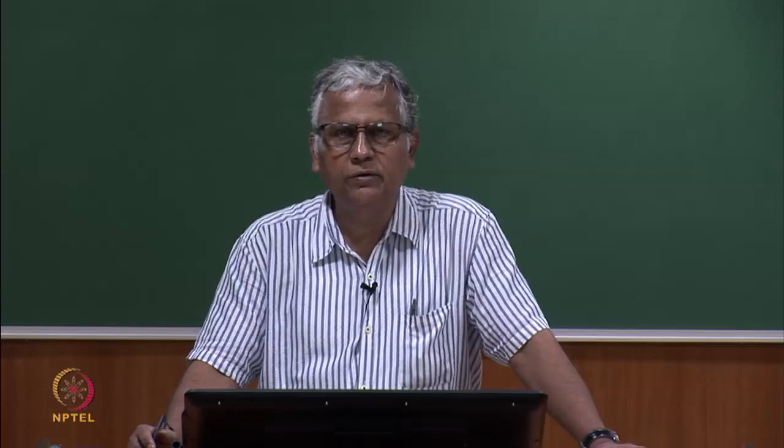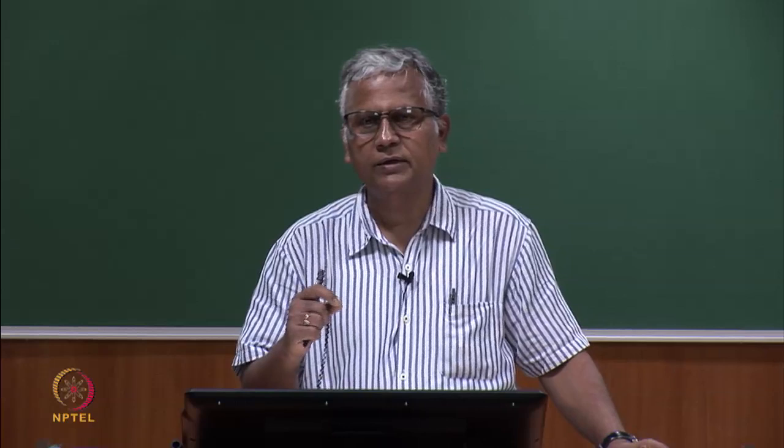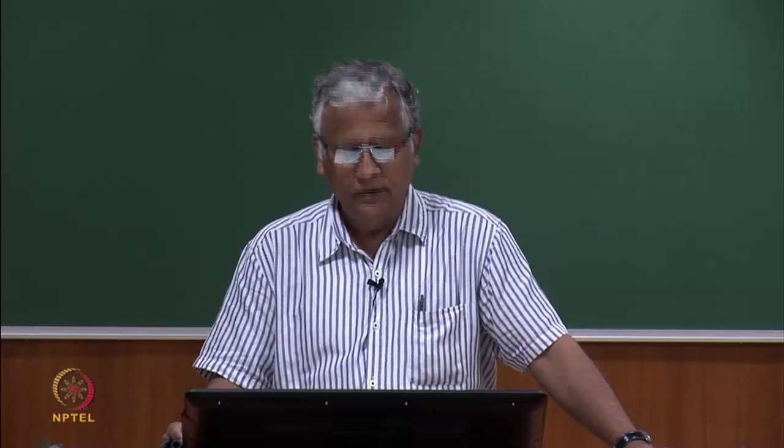Yarn twist in ring spinning is usually kept between 14 to 44 turns per inch. For example, 25 turns per inch means 1 inch is 25 mm, so each millimetre of the fibre is following a helical path with one full turn. Because of this, radial force is generated and we can get sufficient strength in the assembly of fibres.